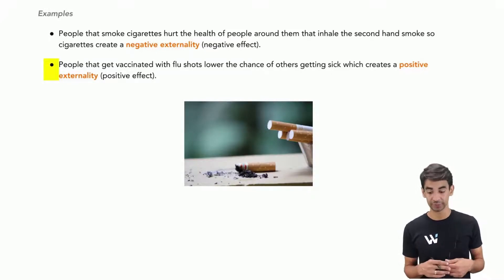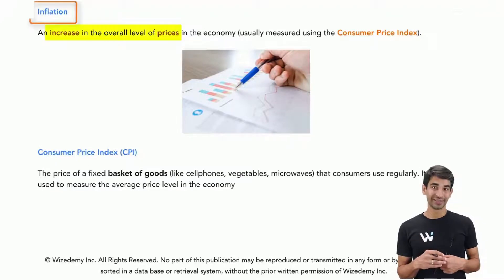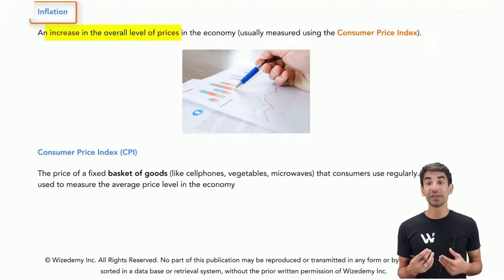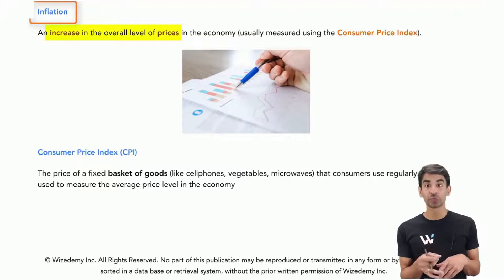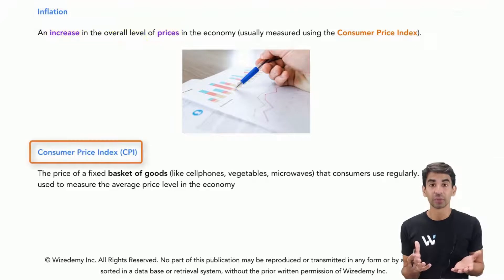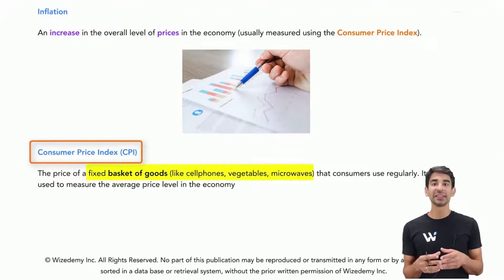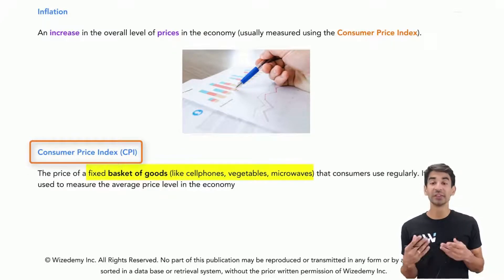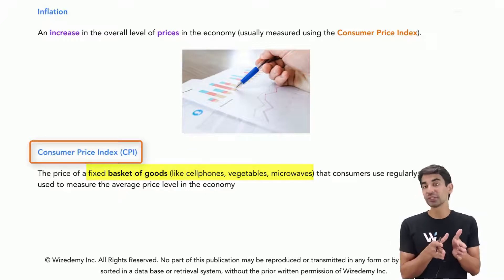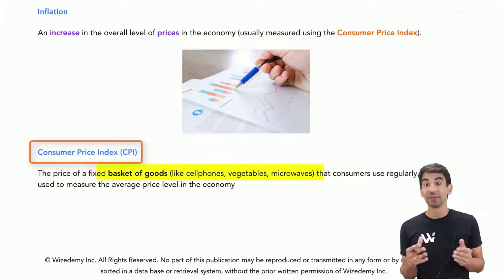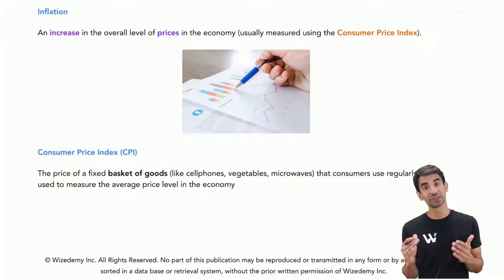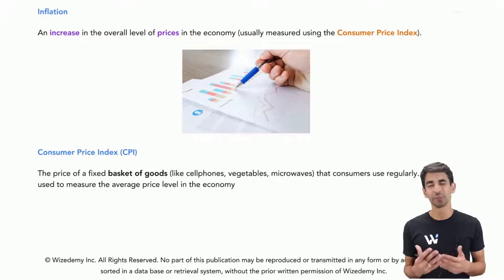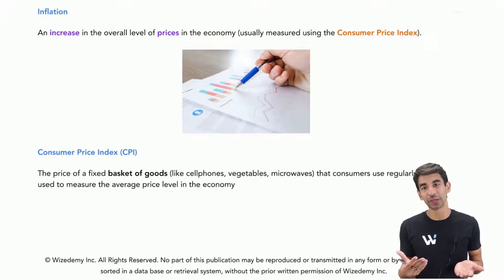Inflation is when there's an increase in overall prices, and it is usually measured with the CPI — the Consumer Price Index. For example, if average rent and grocery prices are going up by 3%, we would say there is 3% inflation. The CPI is a fixed basket of around 300–400 goods — things like vegetables, TVs, microwaves, and cell phones that we use on a day-to-day basis. Prices of these goods are tracked every year. If CPI numbers go up, that means inflation; if they go down, that means deflation. In most countries, prices are generally going up.